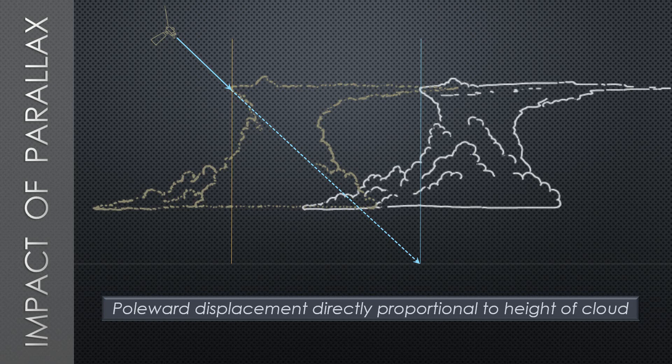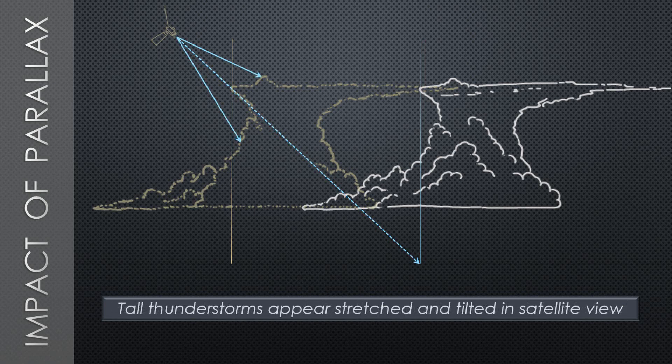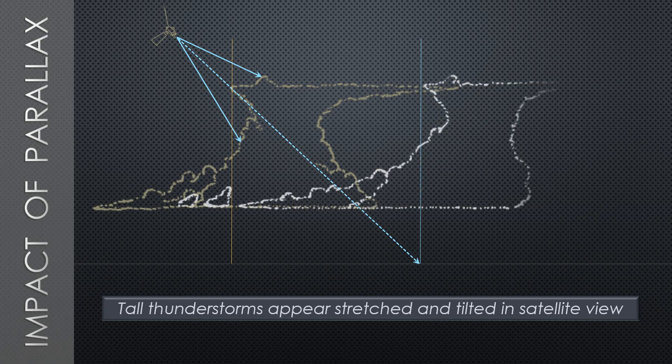A similar displacement occurs in the longitudinal direction. That is, if a tall cloud feature is located to the west or east of the satellite's longitudinal subpoint, it will be positioned farther to the west or east, respectively, as a consequence of parallax. One final point related to the effects of parallax on thunderstorms: because of the satellite's viewing angle and the spatial resolution of the spectral band, the equatorward side of the storm is partially visible, as well as its top. Thus, the image you observe is slightly stretched out and tilted from vertical.